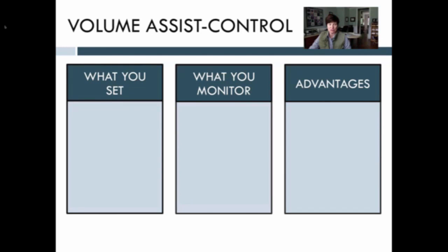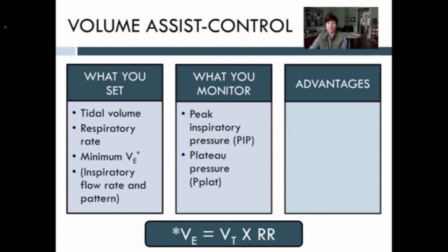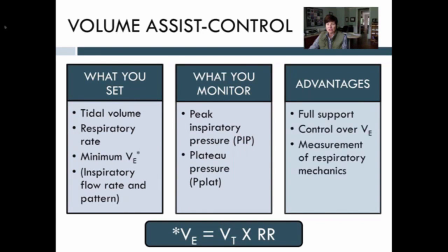Let's talk first about volume assist control. When you set up the ventilator, you set a tidal volume — this is, after all, volume assist control — and we target a tidal volume of 6 to 8 mLs per kilogram. You set a respiratory rate, and together those will assure a minimum minute ventilation. The inspiratory flow rate and pattern are also set, but in almost every institution the respiratory therapists are the ones who set that. Since you've set the volume, you want to monitor the pressures — in particular, the peak inspiratory pressure and the plateau pressure. Advantages include the ability to set a minimum minute ventilation and the ability to measure respiratory mechanics that may be helpful when troubleshooting the ventilator.